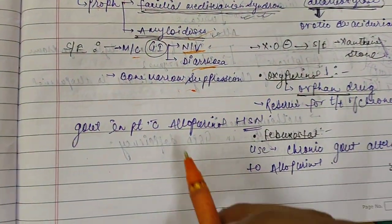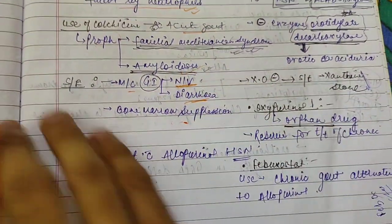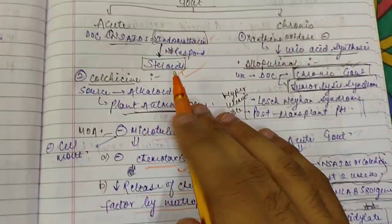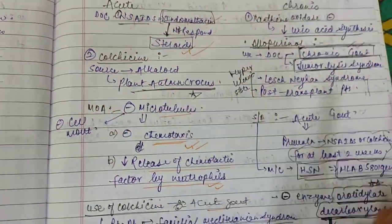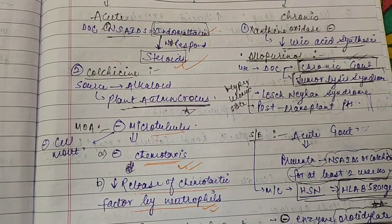Clear. Now coming to the next, this is acute gout treatment—we use two classes of drugs: NSAIDs and colchicine. Now coming to chronic gout, the first drug is